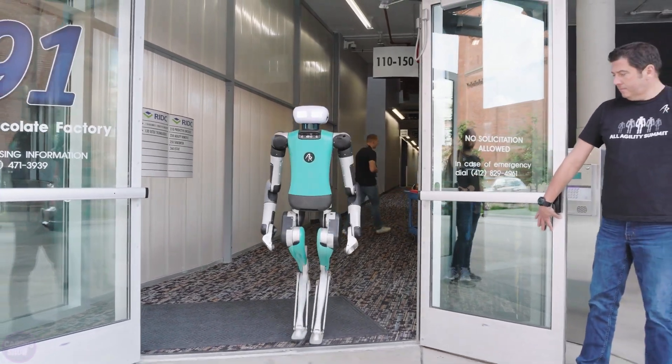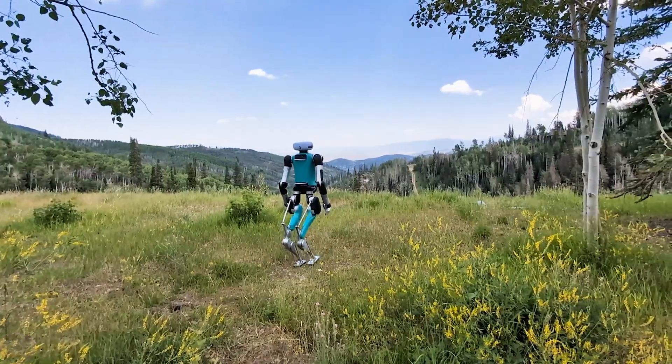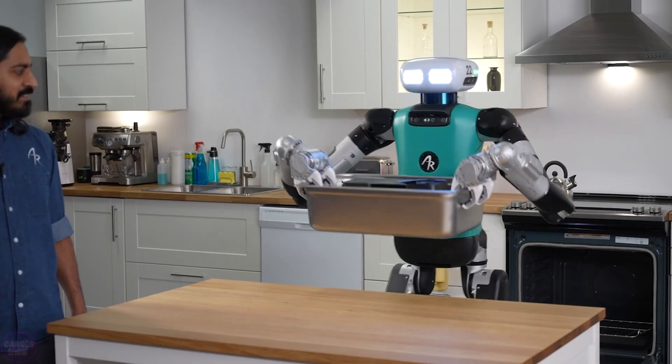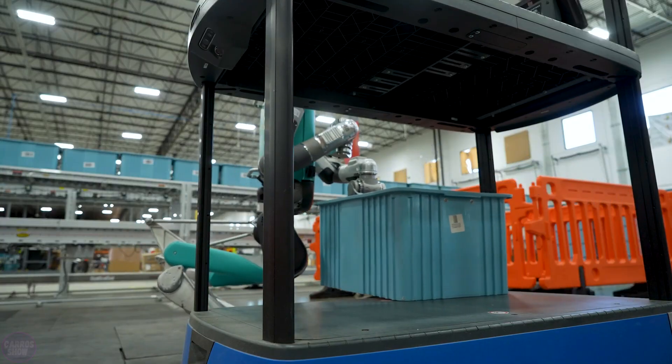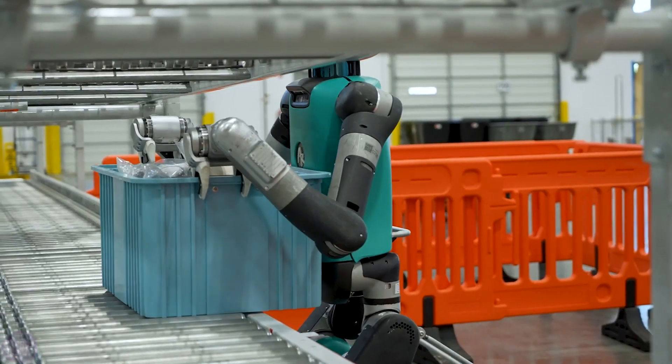Agility Robotics recently explained why their robot digit is equipped with legs rather than wheels, even though it often operates on flat surfaces like warehouses. Legs allow the robot to function in challenging environments where wheels aren't always effective.